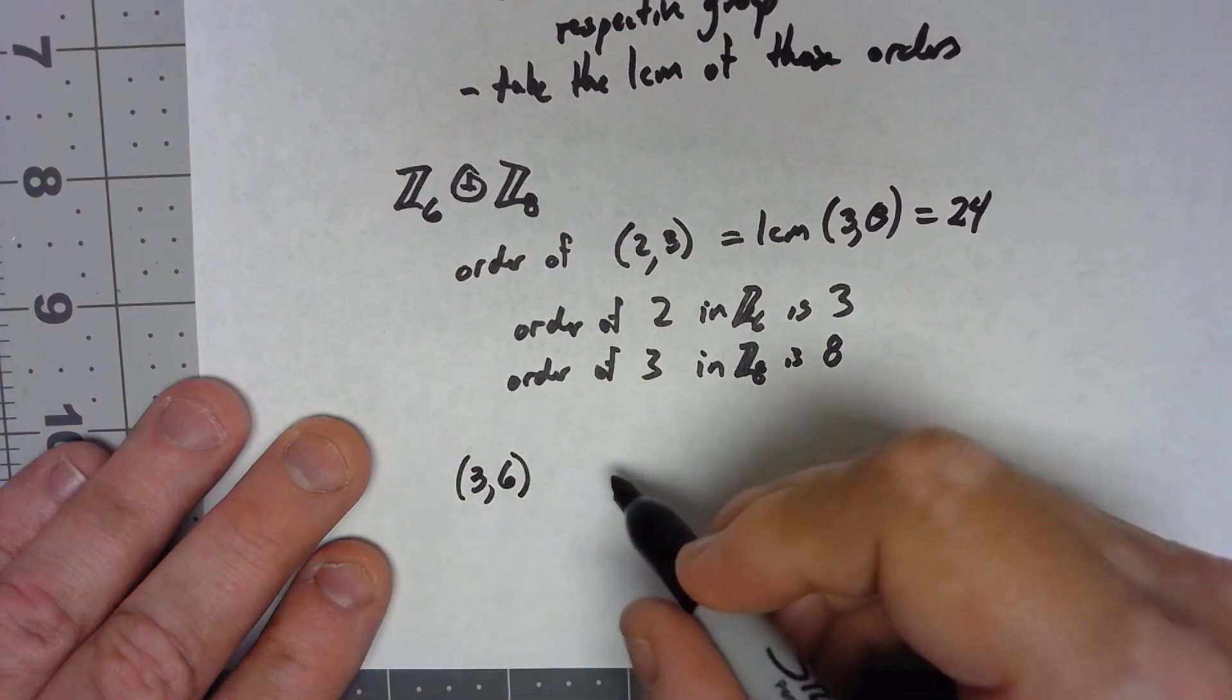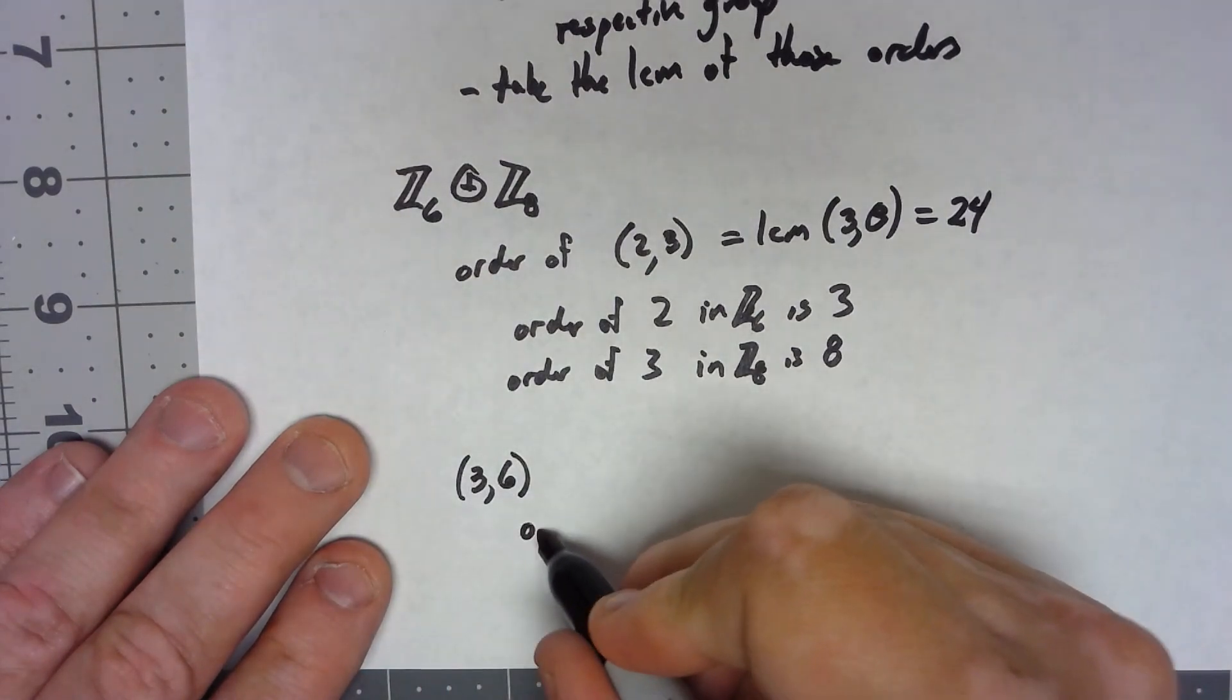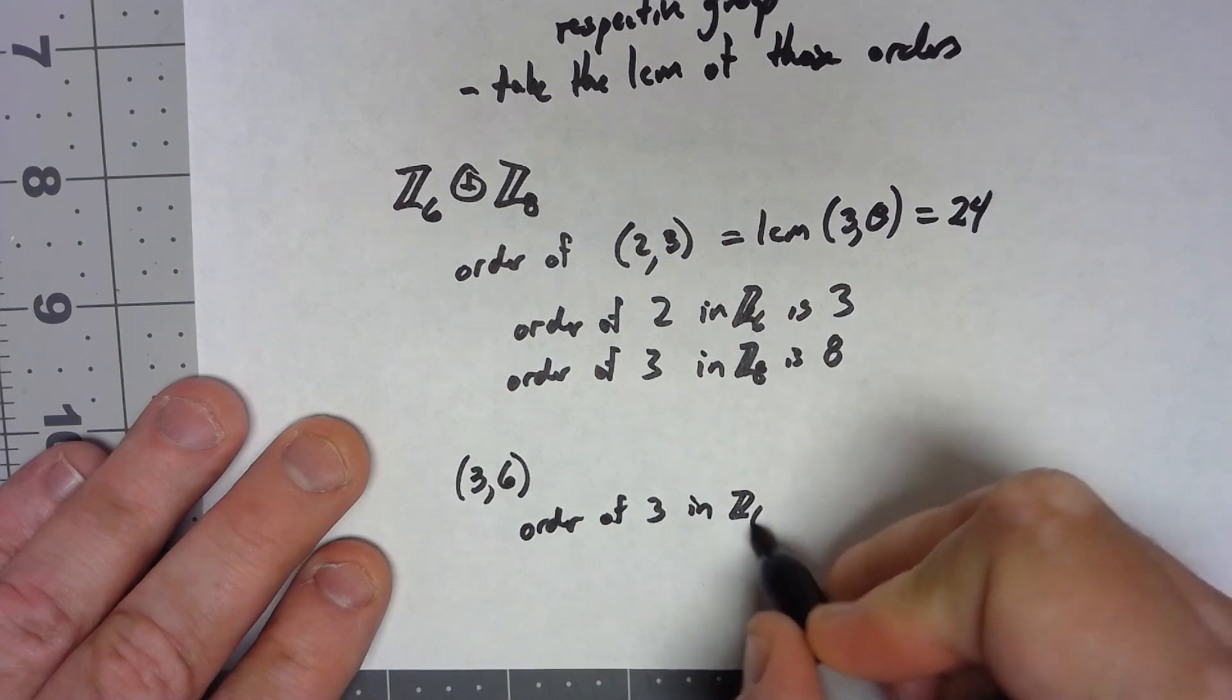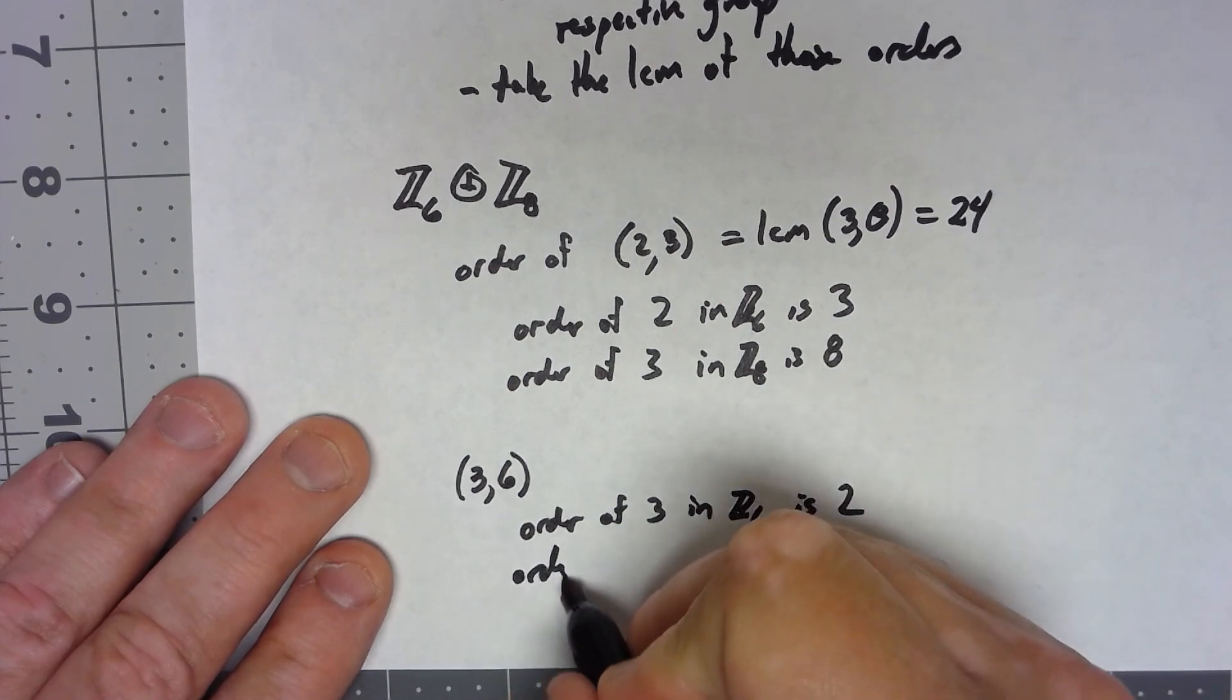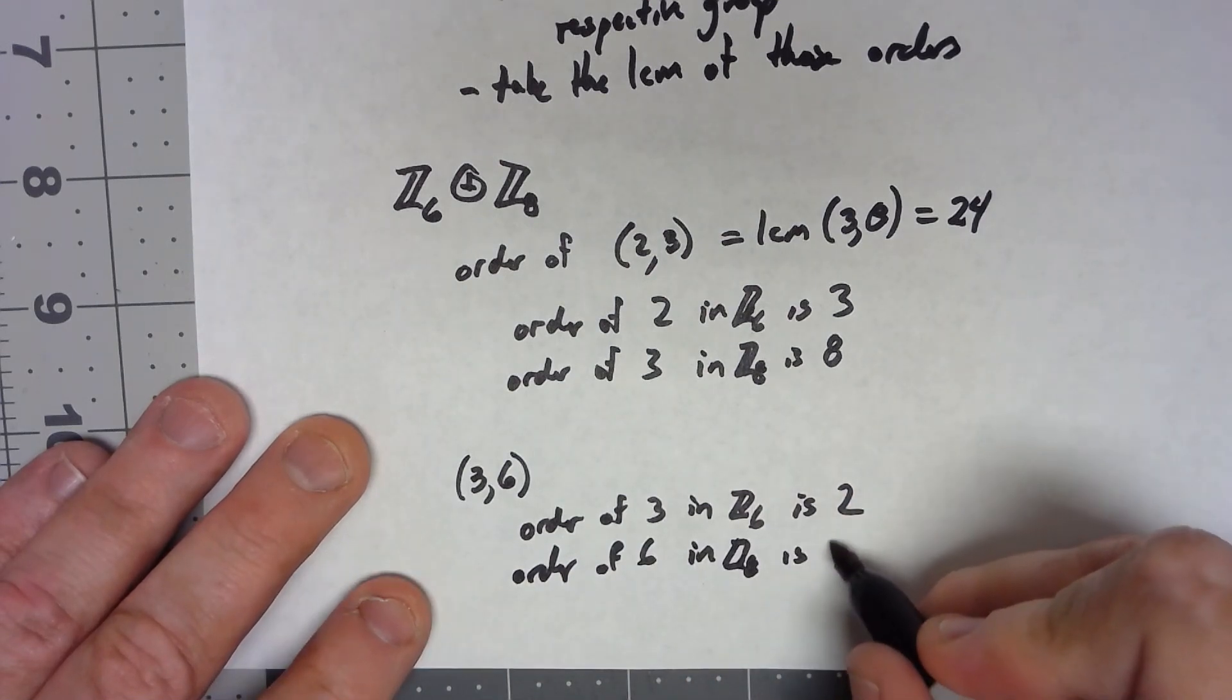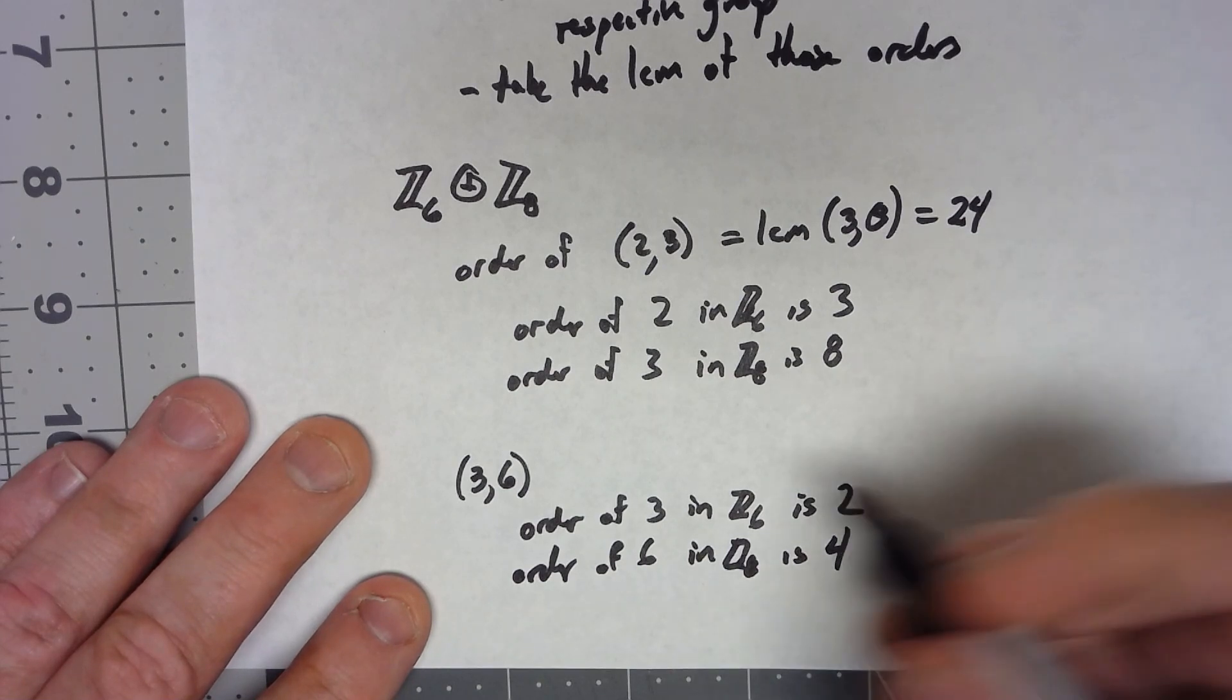The order of 3 in Z6 is 2. The order of 6 in Z8 is 4. So the LCM of 2 and 4 gives the order of (3,6) is 4.